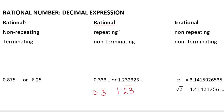For rational numbers, there are two possibilities. The first is terminating. A terminating decimal stops — it does not repeat indefinitely. A terminating decimal comes to an end.